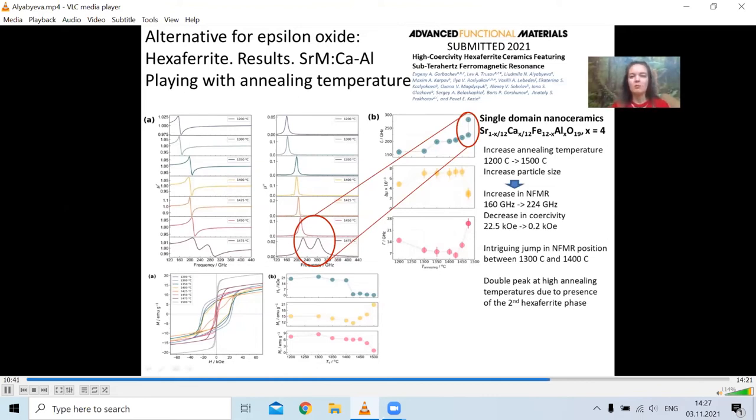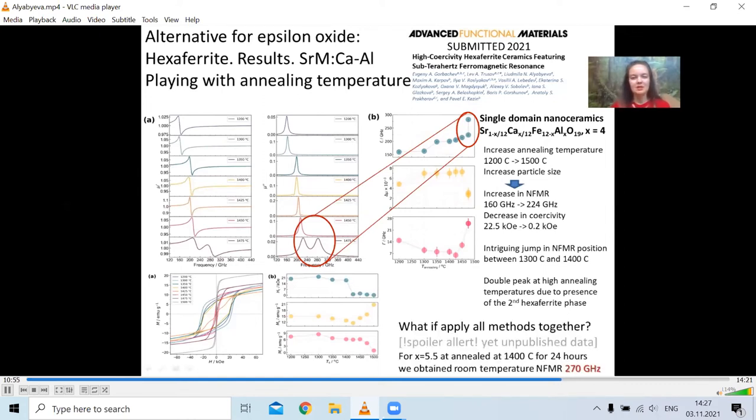And then we thought, if we will combine all variation methods together, will we be able to increase the resonance frequency even larger than we obtained before? And yes, we did it. The work is still in progress. But for the composition that showed record values in the previous work, we obtained even larger values of the natural ferromagnetic resonance frequency position up to 270 GHz.